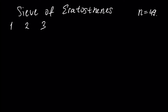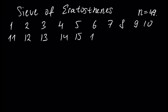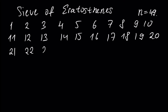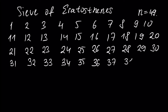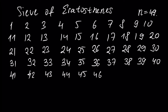One, two, three, four, five, six, seven, eight, nine, ten, eleven, twelve, thirteen, fourteen, fifteen, sixteen, seventeen, eighteen, nineteen, twenty, twenty-one, twenty-two, twenty-three, twenty-four, twenty-five, twenty-six, twenty-seven, twenty-eight, twenty-nine, thirty, thirty-one, thirty-two, thirty-three, thirty-four, thirty-five, thirty-six, thirty-seven, thirty-eight, thirty-nine, forty, forty-one, forty-two, forty-three, forty-four, forty-five, forty-six, forty-seven, forty-eight, forty-nine. And that's all.